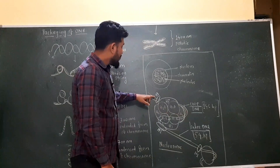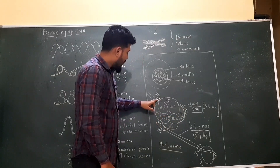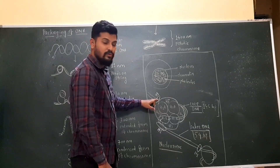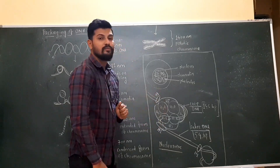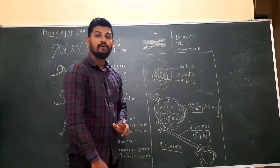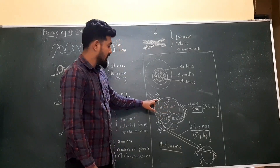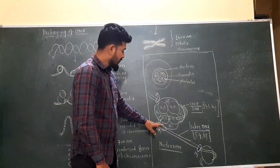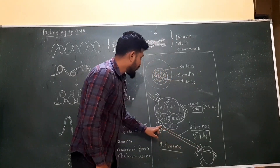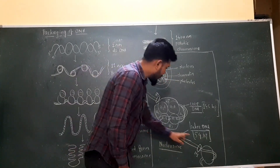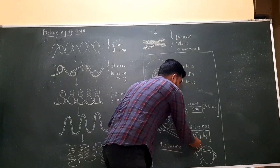When the DNA enters into the nucleosome or into this histone octamer, at the entry and the exit of the DNA, the H1 histone is present. So five histone proteins are involved in the formation of the nucleosome: four involved in the formation of the octamer, and one, which is called H1, is present at the entry and exit of the DNA. From one nucleosome to the another nucleosome, a patch of DNA is present that is also surrounded by the H1 protein. This patch of DNA is called as the linker DNA, which is around 54 base pairs in length.